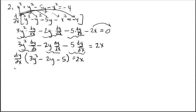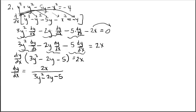As a final step, divide by the quantity factored out to solve for dy/dx. That's the derivative of this equation. Notice this derivative has a combination of both x and y, so to find the rate of change at a particular point you need both the x and y coordinates.